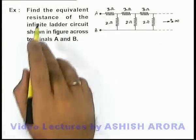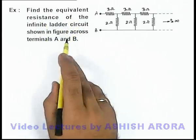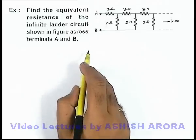In this example, we are required to find the equivalent resistance of the infinite ladder circuit shown in the figure across terminals A and B.